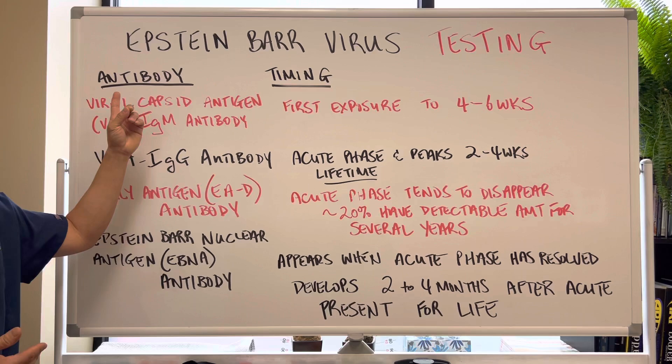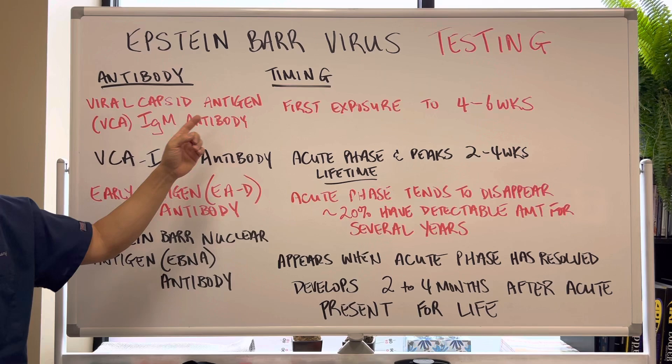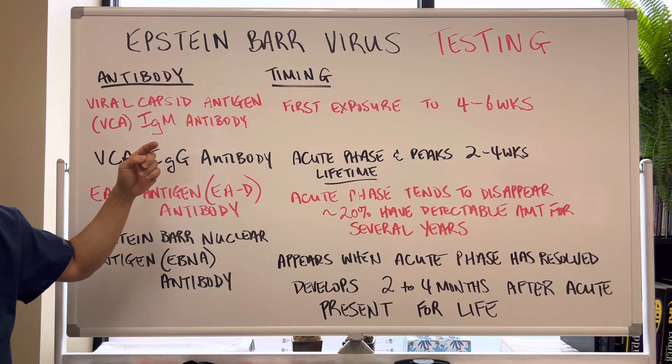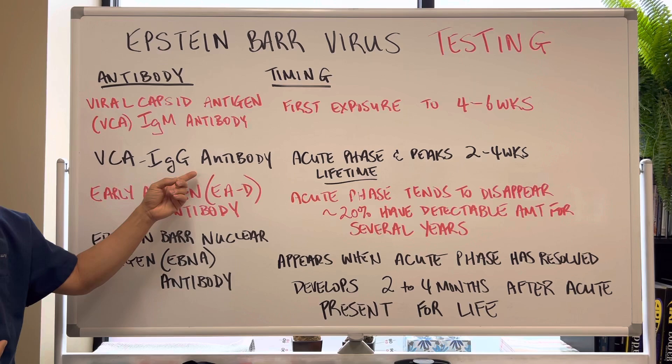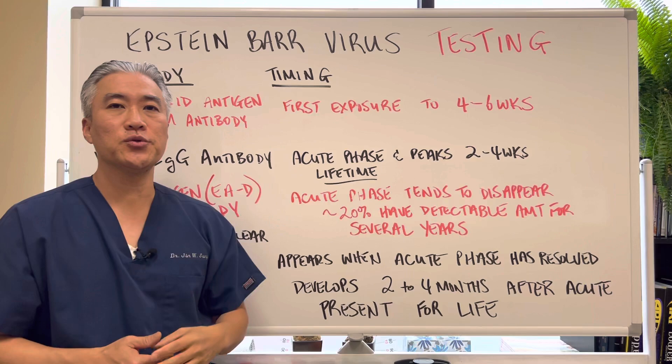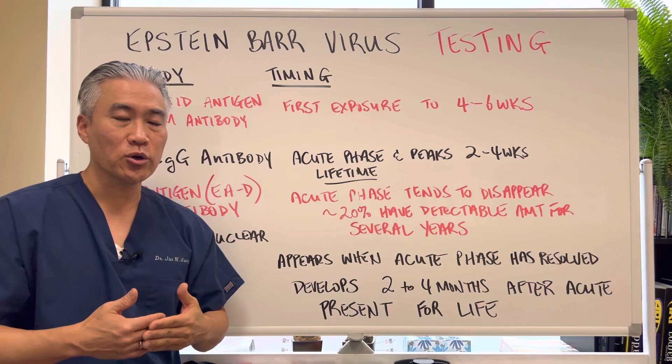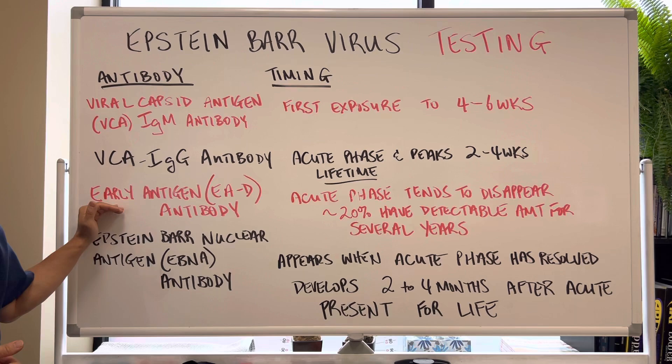For the Epstein-Barr virus, you're looking for antibody testing. It's called viral capsid antigen IgM antibodies, or VCA for short, and it will show up in the first exposure up to four to six weeks out and then disappear. VCA IgG antibodies appear in the acute phases, peak around two to four weeks, and then persist for a lifetime — so it will show up once you've had it, for your entire lifetime.